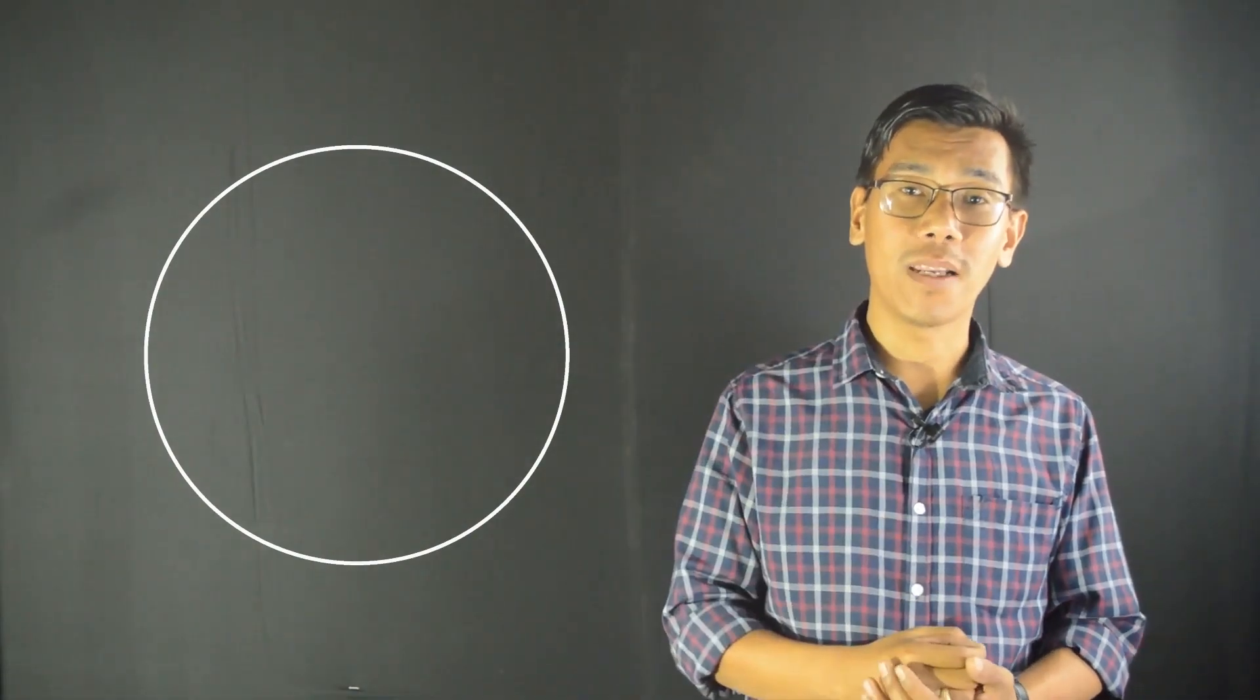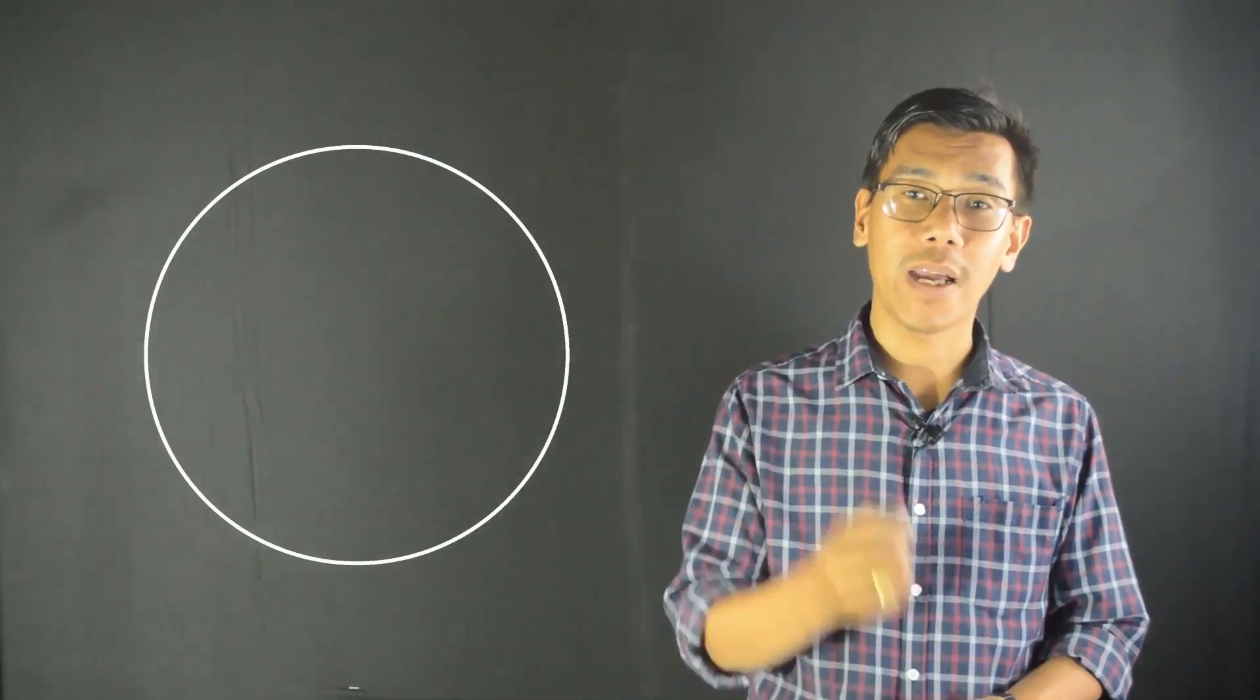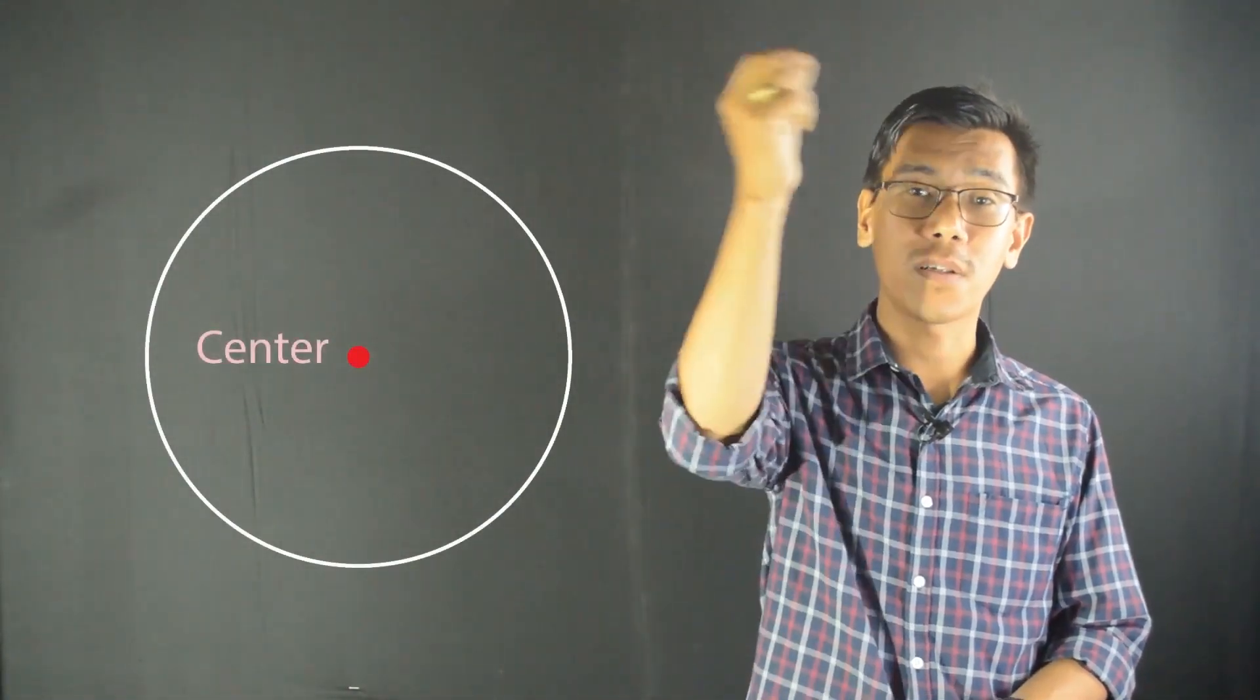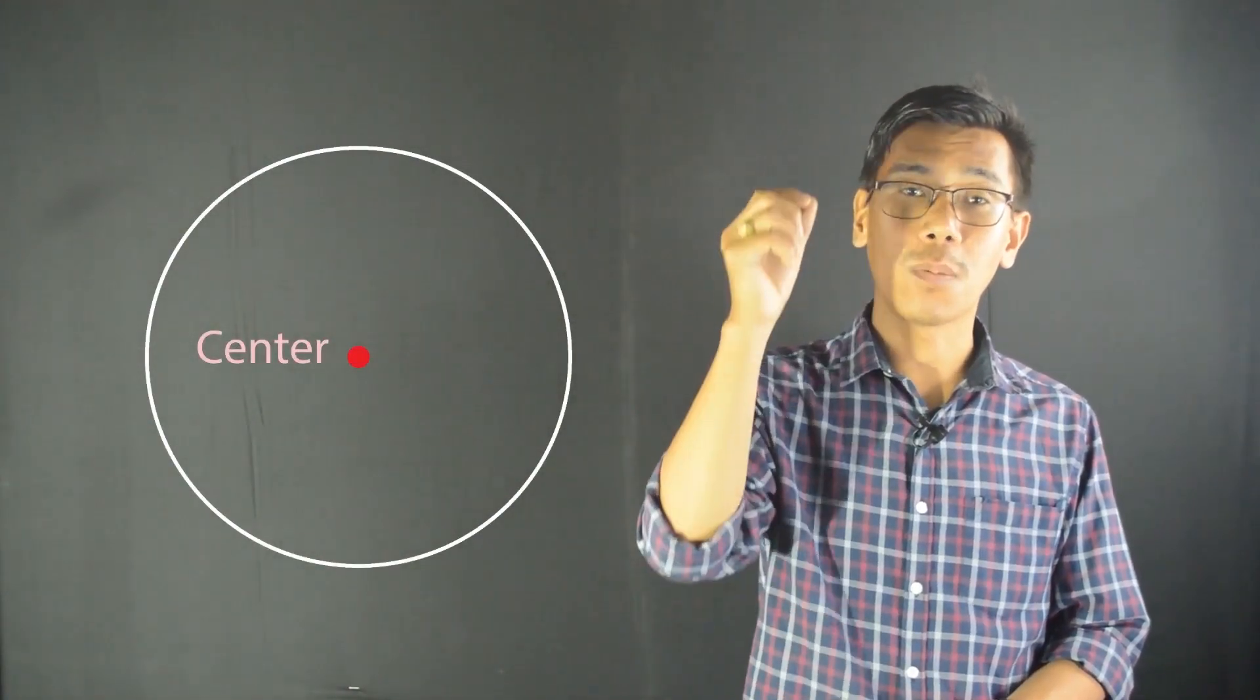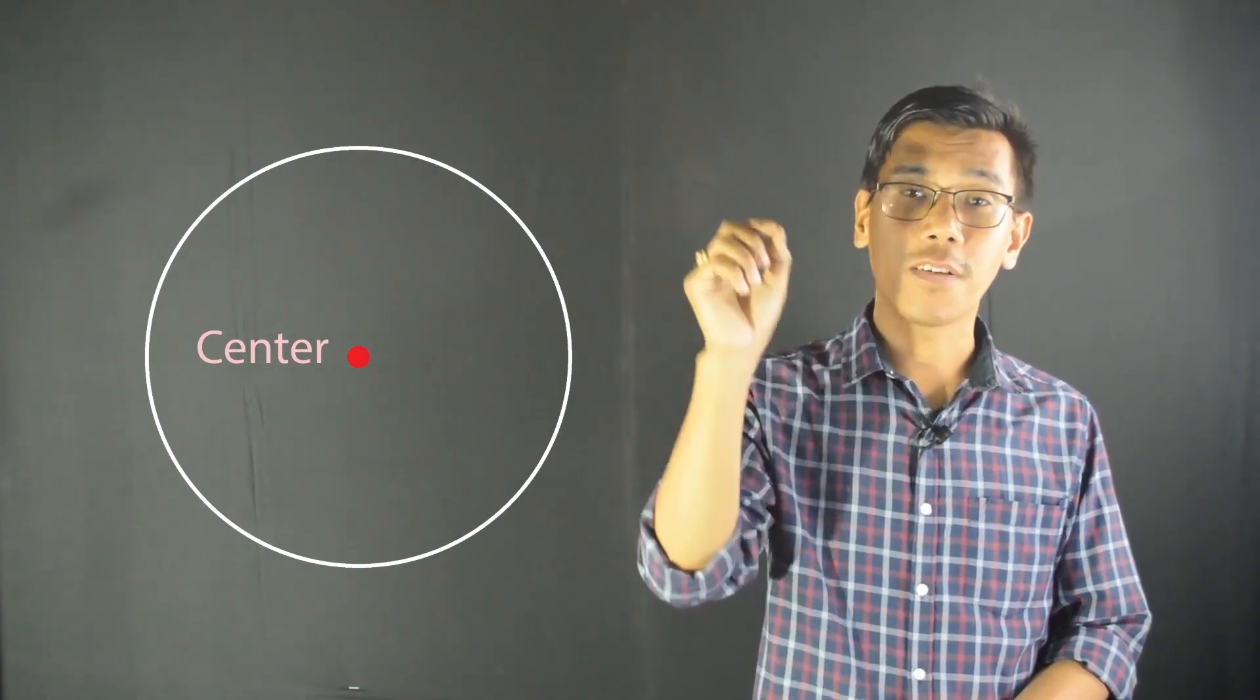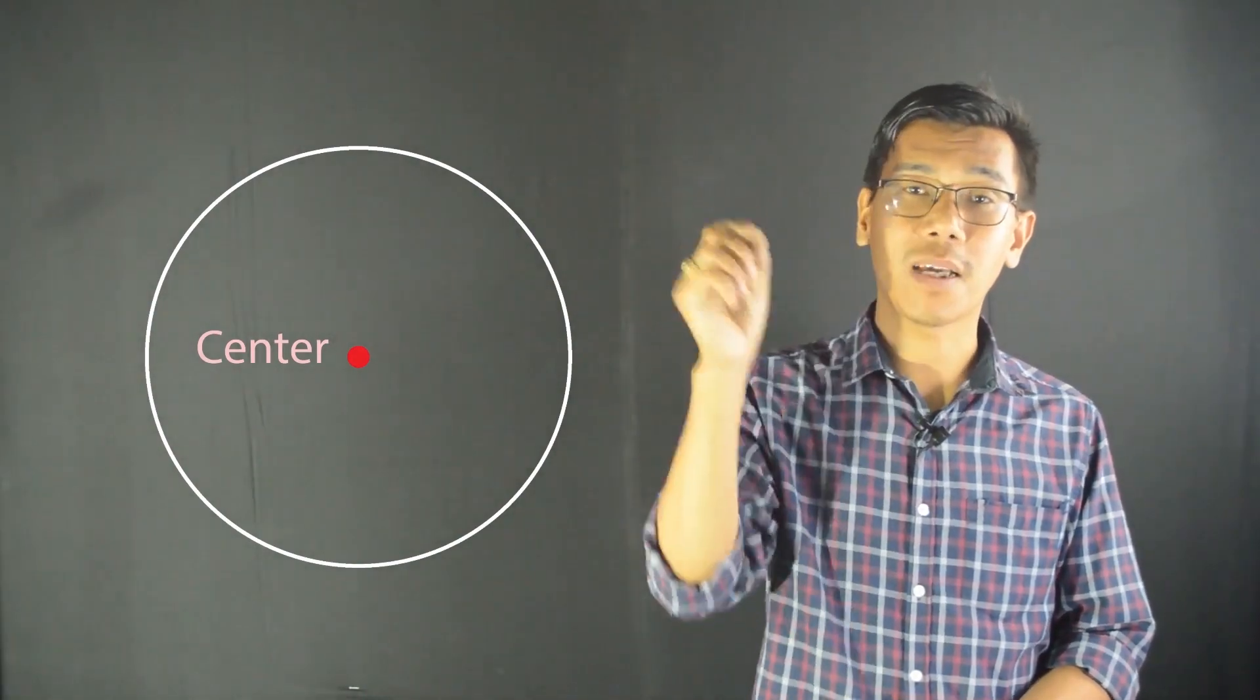The main point is the fixed point, the central point. The center is the point at the middle of the circle. This means that the fixed point, the center, is in place.